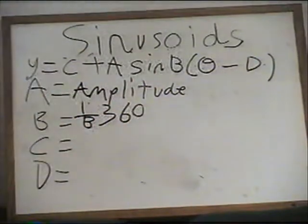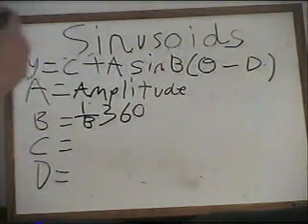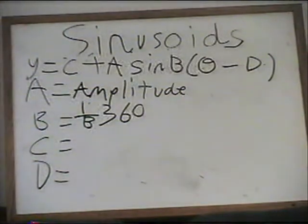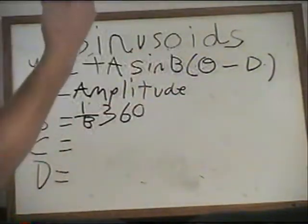The period is actually 1 over B times 360. That's kind of confusing right now, but it will make a lot more sense in a few minutes once we get to the examples. The period is basically how many units, in this case degrees for almost all sinusoids, it takes for the graph to complete a full cycle.